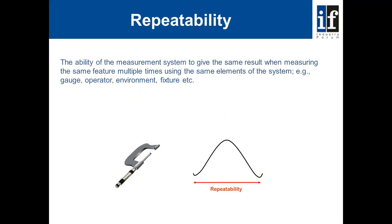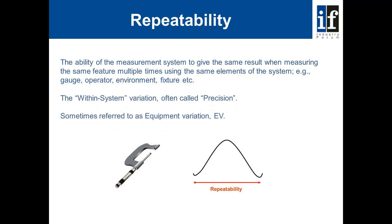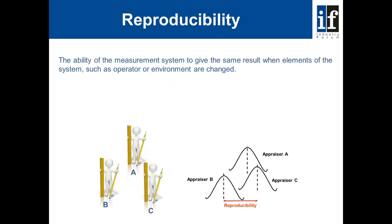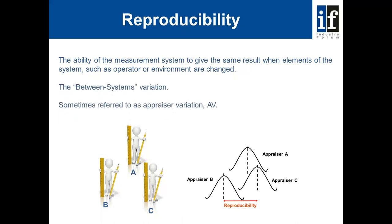Some of the key factors that we deal with are known as R and R, which stands for repeatability and reproducibility. Repeatability is the ability of a measurement system to give the same result when measuring the same feature multiple times using the same elements of the system. We often call this within-system variation, sometimes called precision, and it is sometimes referred to as equipment variation or EV. Reproducibility is the ability of the measurement system to give the same result when elements of the system, such as the operator or the environment, are changed. This is called between-systems variation and is also sometimes referred to as appraiser variation or AV.